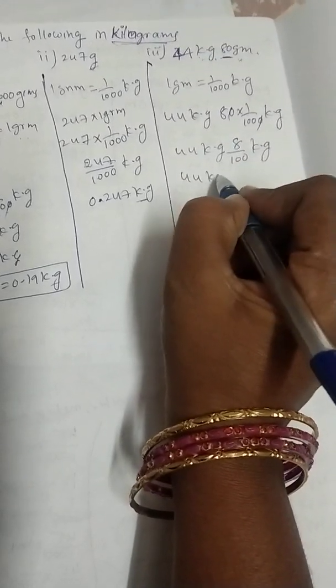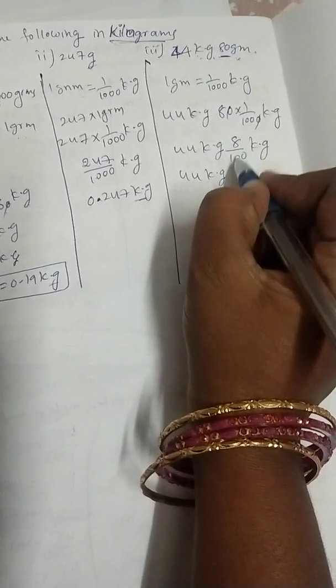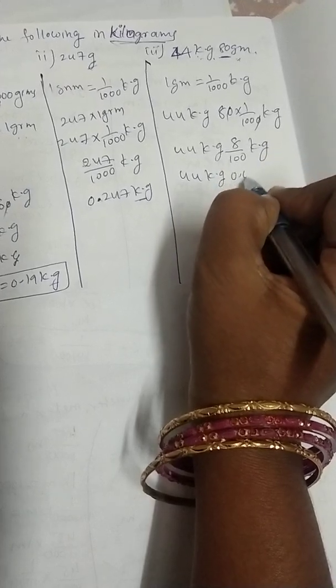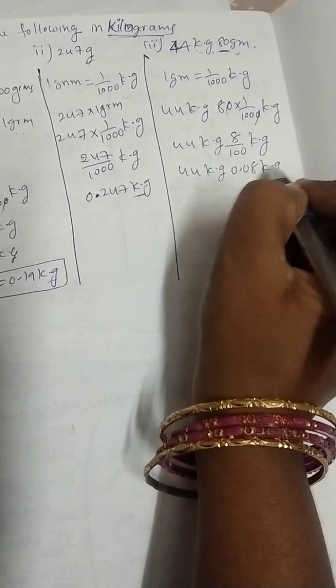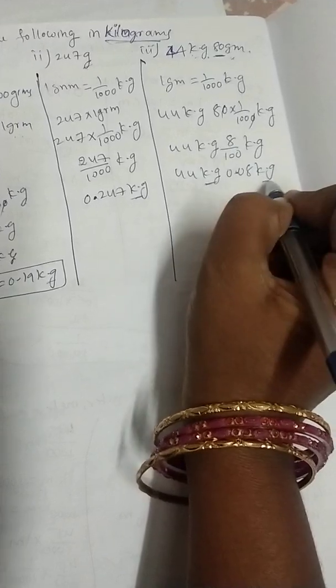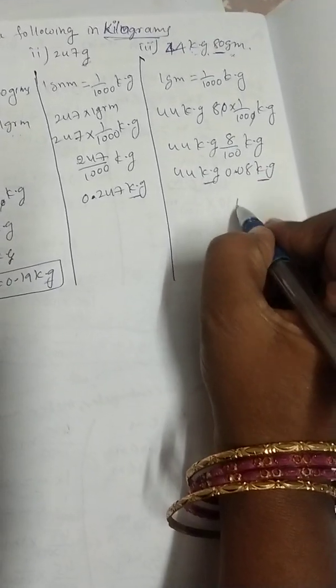44 kg, this we can write in decimal form, 0.08 kilograms. Now both are in kilograms, we can add that value.